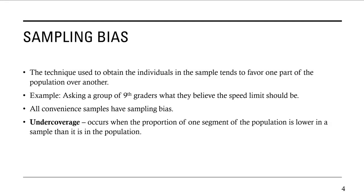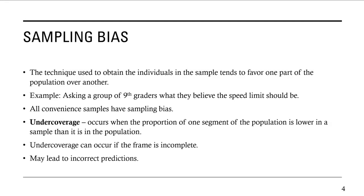Under coverage occurs when the proportion of one segment of the population is lower in a sample than it is in the population. For example, say a college has a population that is majority female, but they take a sample that is mainly males. In that case, we have under coverage of females, who are usually the majority of the population. Under coverage can also occur if the frame is incomplete — remember, the frame is the list of all the people in the population. If you don't have a complete frame, you don't have a complete picture of your population, which can result in under coverage. Sampling bias most of the time leads to inaccurate or incorrect predictions.